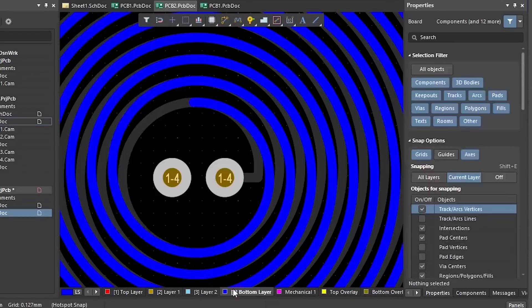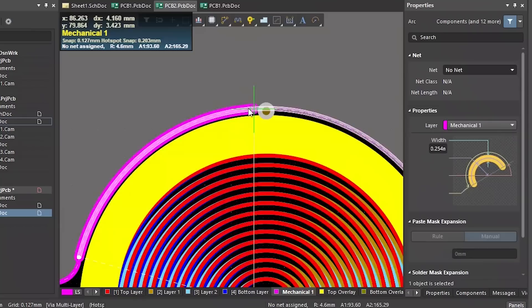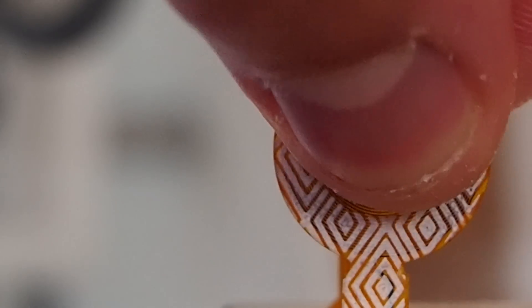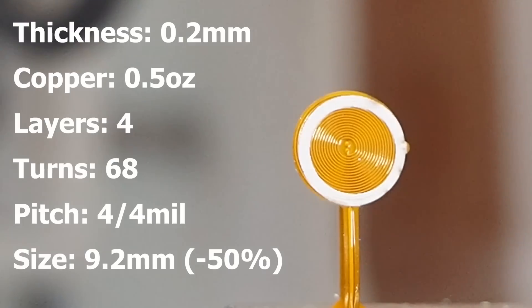And that's exactly what I did. I reduced the area by going from 35 turns per layer to 17 turns per layer. And this got us to 50% smaller than the original design.